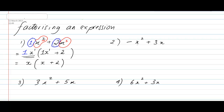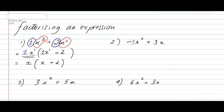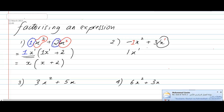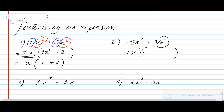Now let's look at question number 2. The difference from question 1 is that there is a negative x squared, but the process is exactly the same. I'll write down all the invisible numbers to make the calculation easier. Doing the same steps: what goes into minus 1 and 3? The highest number that goes into 1 and 3 is 1.